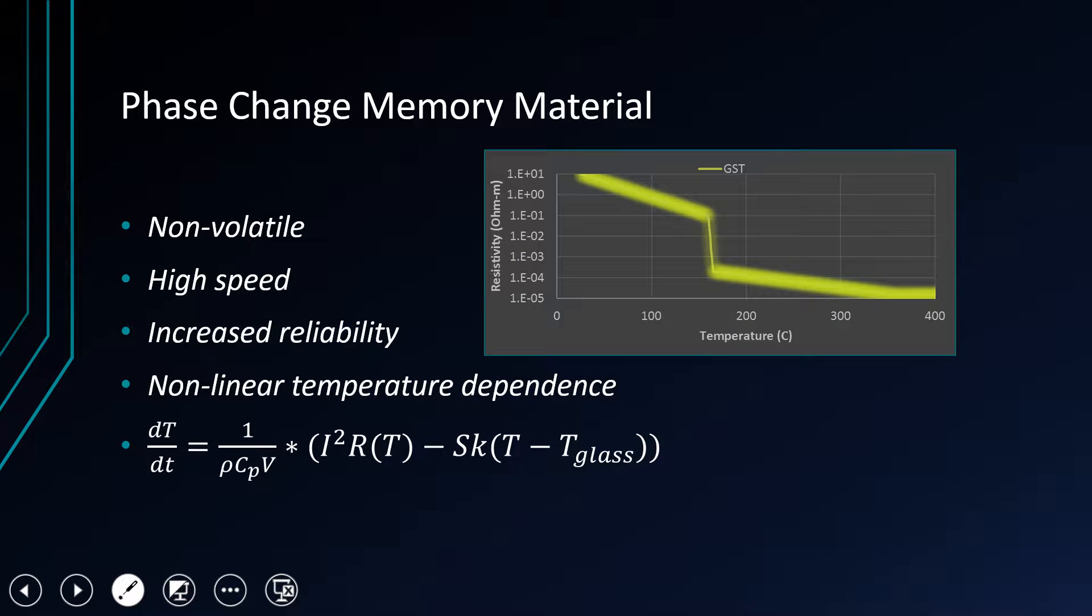The phase change memory material is interesting because it has the potential for non-volatile material, meaning you don't have to supply current to maintain the memory. You set the memory to one or zero and it will hold it indefinitely. It's also high speed, nanoseconds, ten nanoseconds, and very reliable because once the phase has been set, it will hold that phase for a very long period of time.